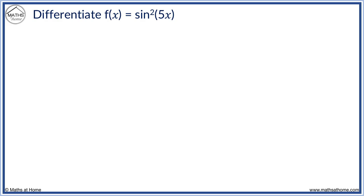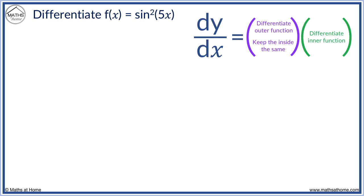Here we have sine squared 5x. This means sine of 5x squared. This is just a different way to write it that will make it easier to differentiate.